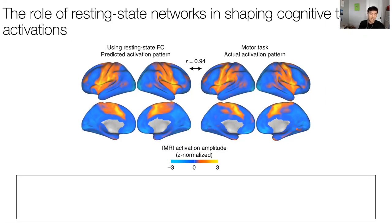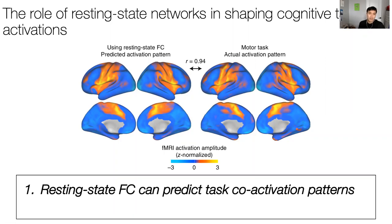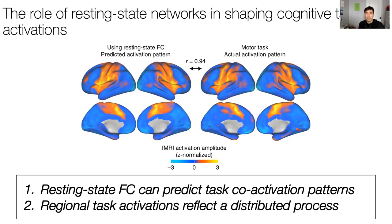Doing this iteratively for every voxel yields a whole-brain activation pattern that we can compare with the actual pattern and find highly similar. The two main take-homes are: first, resting-state functional connectivity can predict task co-activation patterns; and second, regional task activations reflect a distributive process—the green region's task activation can be explained by the activations of other brain areas.